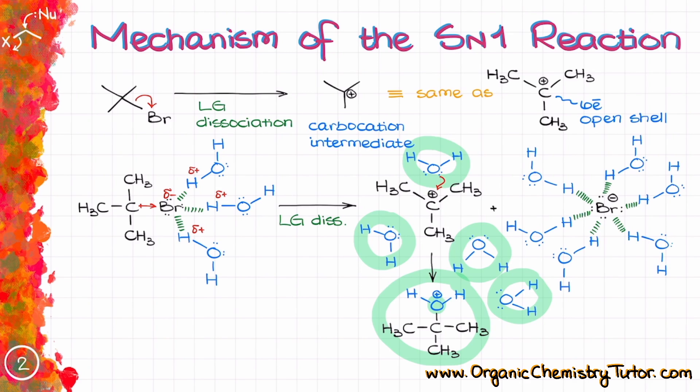And we can pull away this positive charge by deprotonating our molecule with the Br- or another H2O molecule, which is actually statistically more likely. And if we do so, what we're going to end up with, our final product, is going to be an uncharged alcohol in this case.